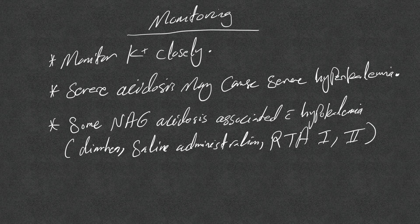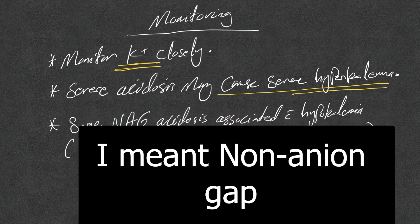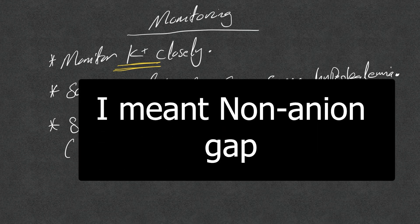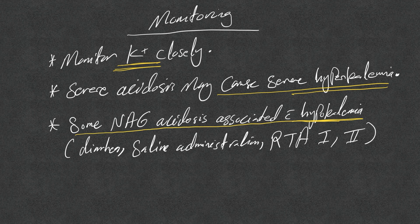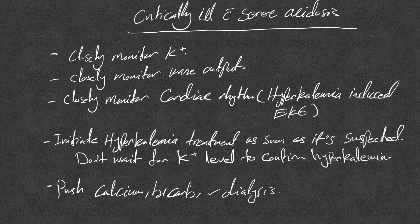Monitor potassium very closely, especially in severe acidosis — severe acidosis can cause severe hyperkalemia rapidly. A potassium of 4 to 4.5 can become 6 within 30 minutes. All high anion gap acidoses are associated with hyperkalemia, but some normal anion gap acidoses — like diarrhea, saline administration, and RTA types 1 and 2 — are associated with hypokalemia.